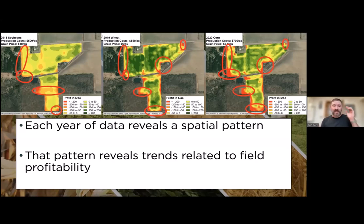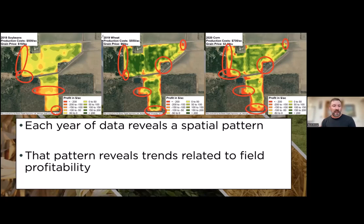On the left I have that same field quantified from the 2018 soybean map—production cost was $500 an acre and grain price around $10. In 2019, the middle map, I have wheat. The map on the right is the 2020 corn year with a production cost of $700, sold for about $3.90. I have highlighted in red areas that regardless of the crop, regardless of the year, we lost money. Every farmer we talk to can attest: I have parts of my field that make me money, and parts that don't.